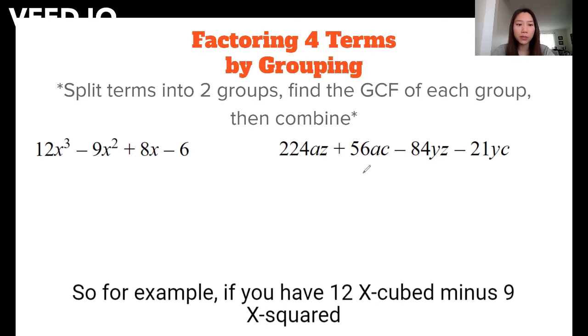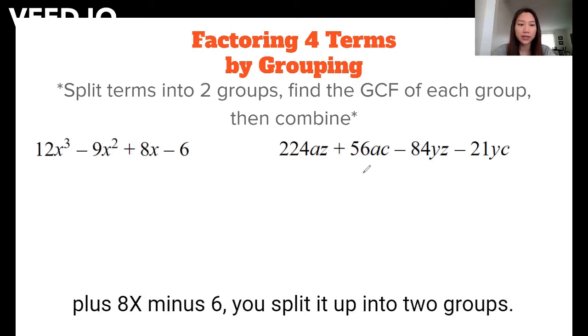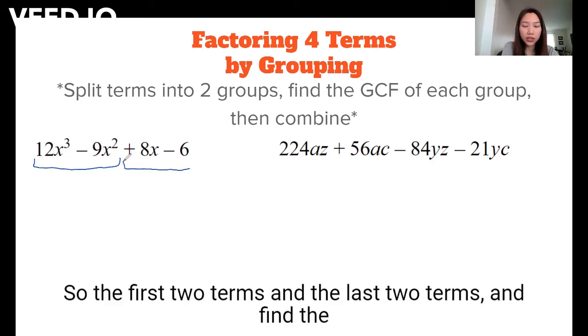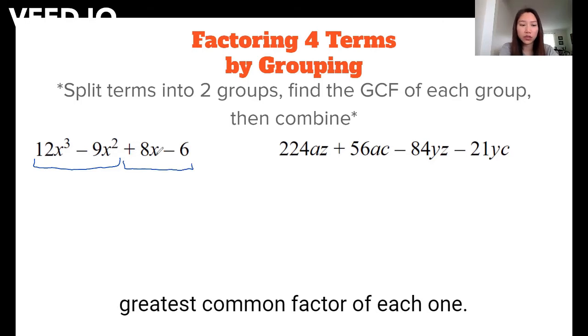So for example, if you have 12x³ - 9x² + 8x - 6, you split it up into two groups, so the first two terms and the last two terms, and find the greatest common factor of each one.